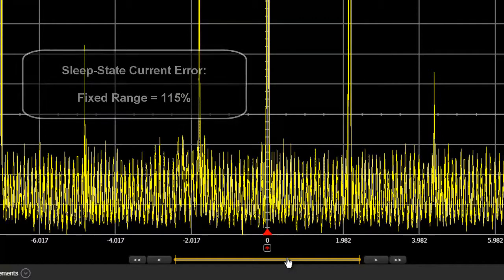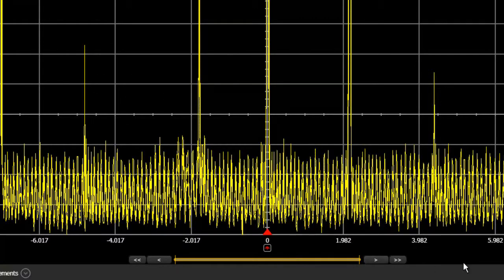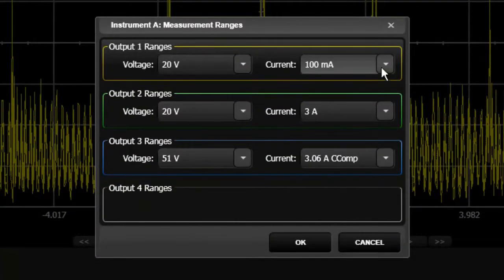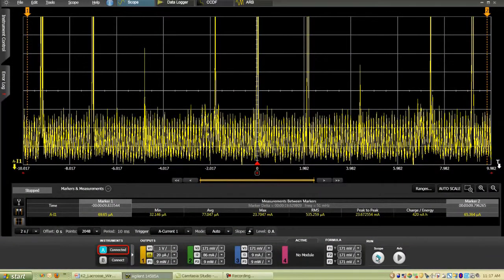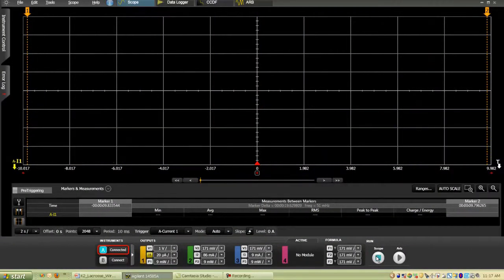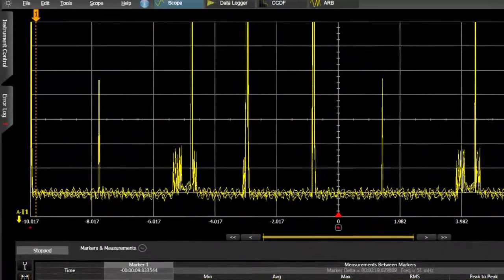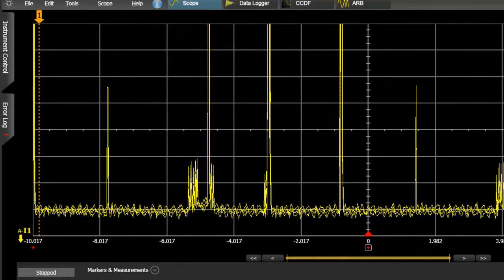Then we changed the N6781A SMU to use its innovative measurement system that seamlessly auto ranges, continuously digitizing this current from nanoamps to amps at over 195 kS per second. This provides accurate measurements over a greatly extended dynamic range.